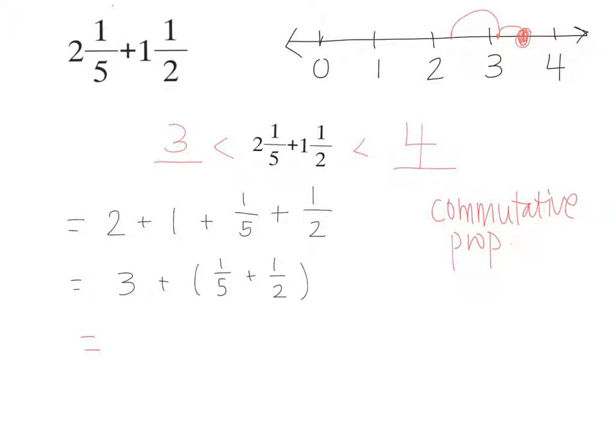So what I can say is this is equal to 3. We can't forget the whole number part, right? 3 plus 1/5 times what version of 1 would I need to multiply 1/5 by to get the denominator to be 10? 2/2. We're going to multiply 1/5 by 2/2, and then we can add that to 1/2 multiplied by a different version of 1. What version of 1 might we want to multiply 1/2 by? 5/5. You got it.